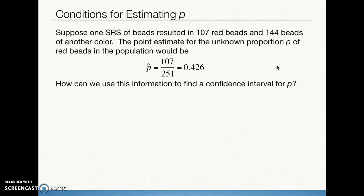Our point estimate, p-hat, is calculated by dividing 107 by 251 — the sum of 107 and 144, giving the total number of beads in the sample. We end up with 0.426 to three decimal places.